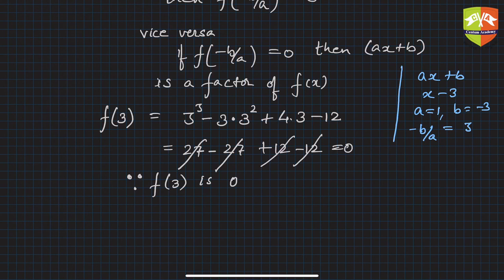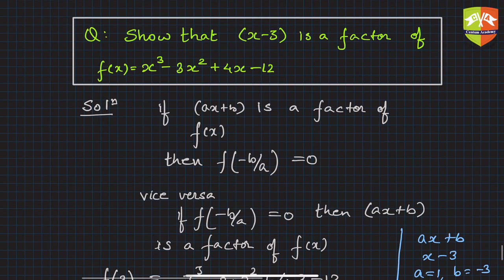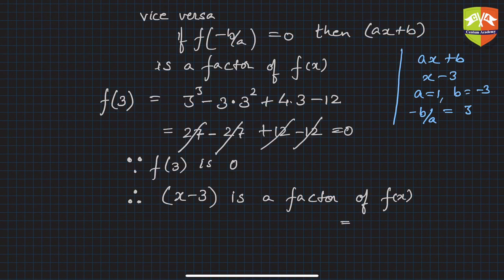Hence, or therefore, (x - 3) is a factor of f(x), which is given as x³ - 3x² + 4x - 12. Of this particular polynomial, (x - 3) is a factor.